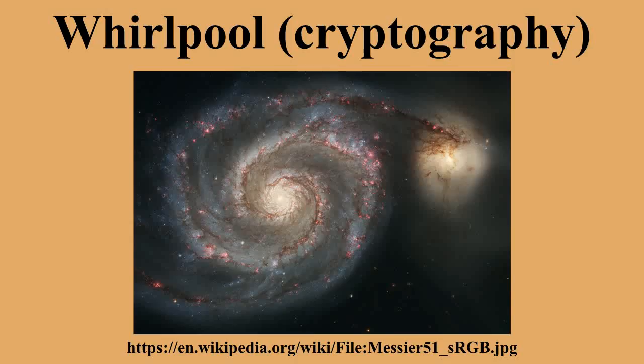The original Whirlpool is called Whirlpool-0, the first revision is called Whirlpool-T, and the latest version is simply called Whirlpool. In the first revision in 2001, the S-box was changed from a randomly generated one with good cryptographic properties to one which has better cryptographic properties and is easier to implement in hardware. In the second revision, a flaw in the diffusion matrix was found that lowered the estimated security of the algorithm below its potential, and the 8x8 rotating matrix constants were changed to resolve this issue.